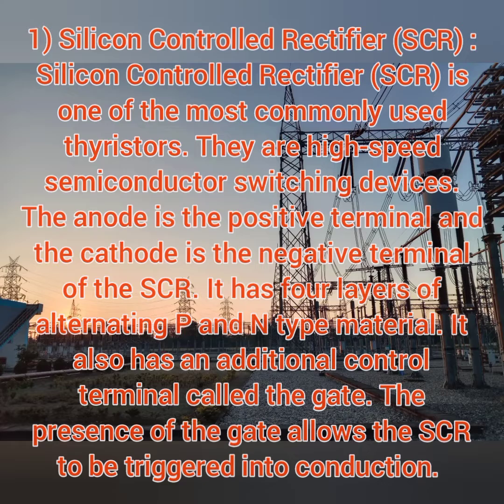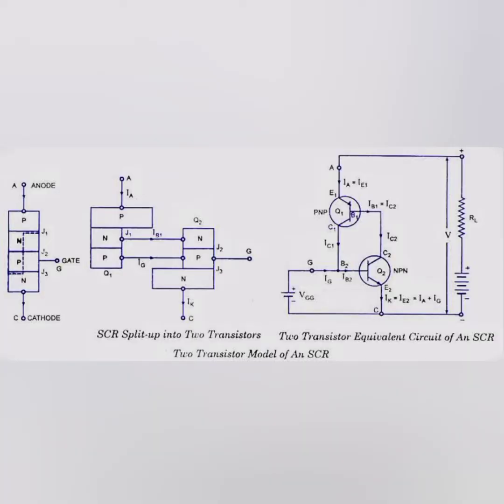Normally, a diode will have positive and negative terminals. In addition to the two layers — positive and negative — adding additional layers forms a thyristor. The presence of a gate allows the SCR to be triggered into conduction. So as I said, it is an upgradation of your diode, which means it converts AC to DC.